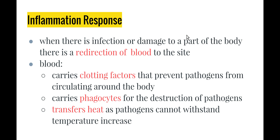Let's start with the inflammation response. No doubt everybody's either cut themselves or knocked themselves badly and ended up with an area that's swollen, red, and warm — that's the inflammation response. When there is an infection or damage to part of the body, the circulatory system redirects blood to that site. The blood carries clotting factors that help prevent pathogens from circulating around the body, forming clots on either side of the damaged area to trap those pathogens.